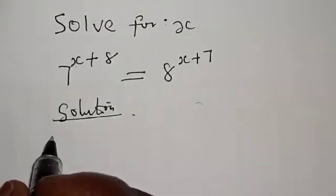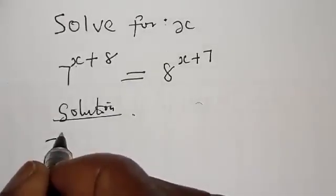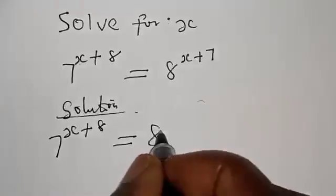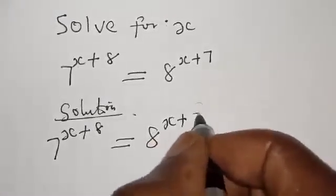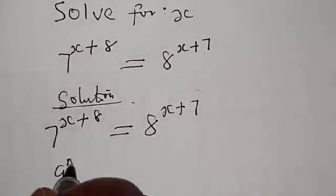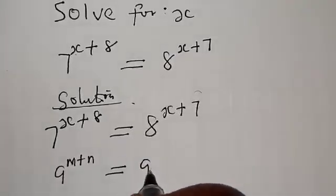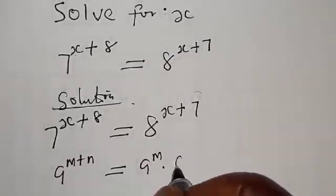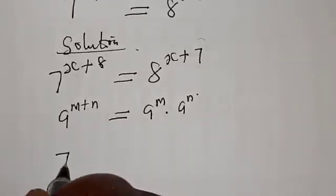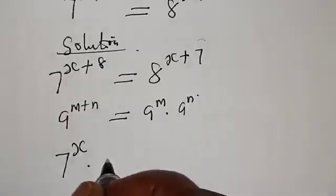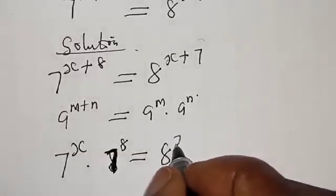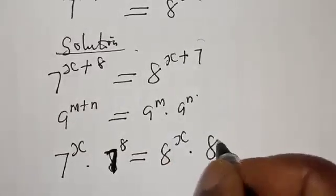Solution. We have 7 raised to power x plus 8 is equal to 8 raised to power x plus 7. We recall that if you have a raised to power m multiplied by a raised to power n, we can rewrite this as 7 raised to power x multiplied by 7 raised to power 8 is equal to 8 raised to power x multiplied by 8 raised to power 7.